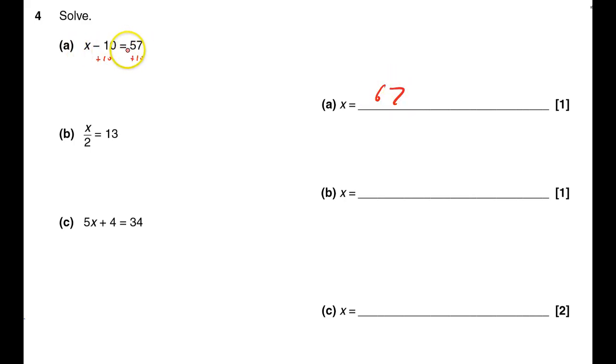67 take away 10 is 57, that's good. For x divided by 2 equals 13, that must be 26. Times by 2 will get rid of that division. For this one here, I would take away 4.